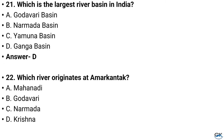Question number 22. Which river originates at Amarkantak? Option A: Mahanadi, Option B: Godavari, Option C: Narmada, Option D: Krishna. And the answer is Option C: Narmada.